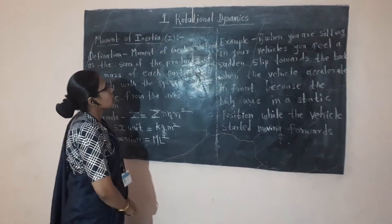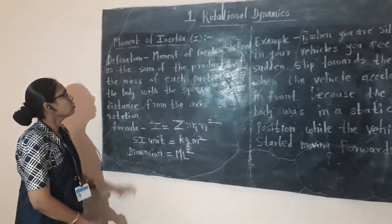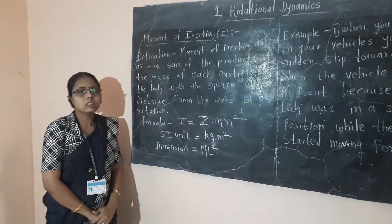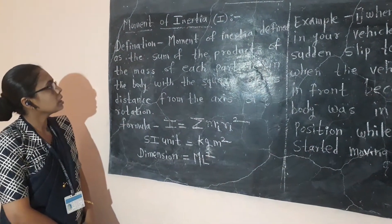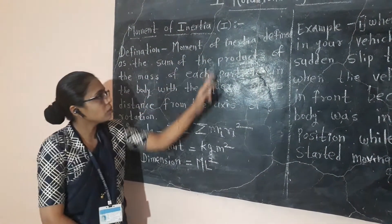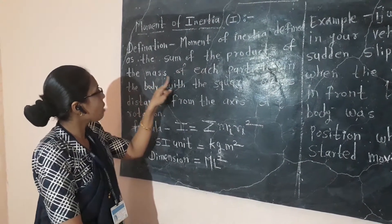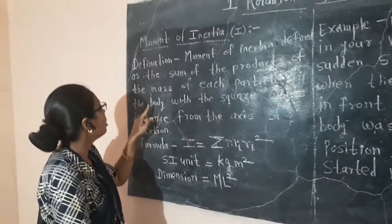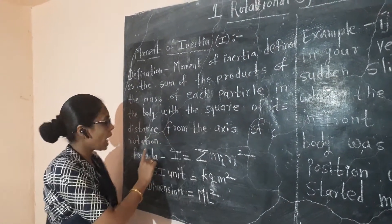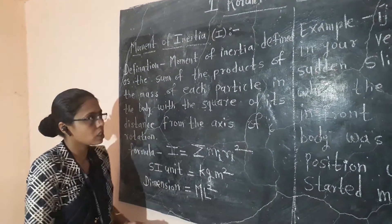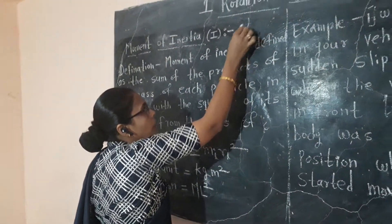First chapter: Rotation Dynamic. The next point is Moment of Inertia. Moment of Inertia is defined as the sum of the product of the mass of each particle in the body with the square of its distance from the axis of rotation. Because if the body is rotated, whether it is a particle or an object.